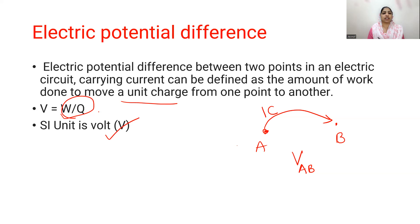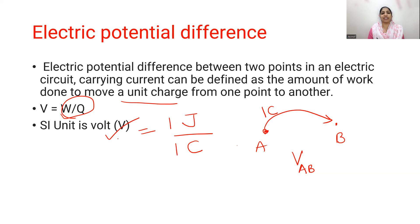The SI unit is the Volt. W is work, unit is Joule. Q is charge, unit is Coulomb. 1 Volt can be defined as the potential difference if 1 Joule of work is required to bring 1 Coulomb of charge from one point to another point.